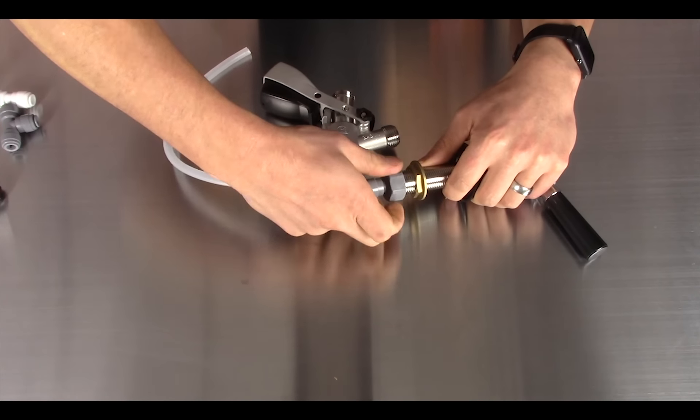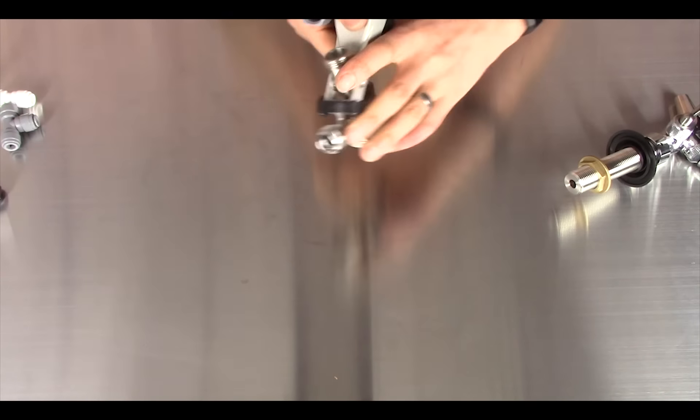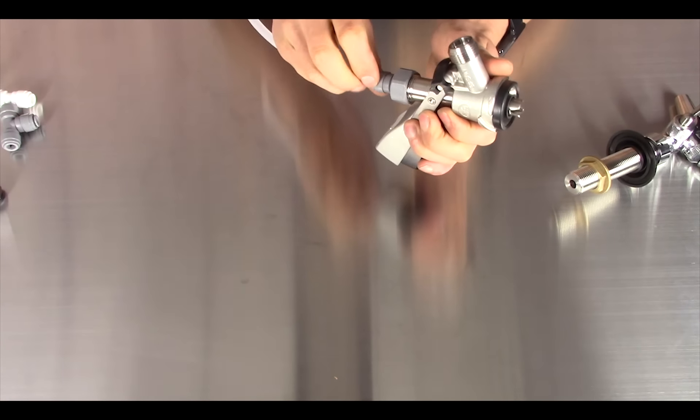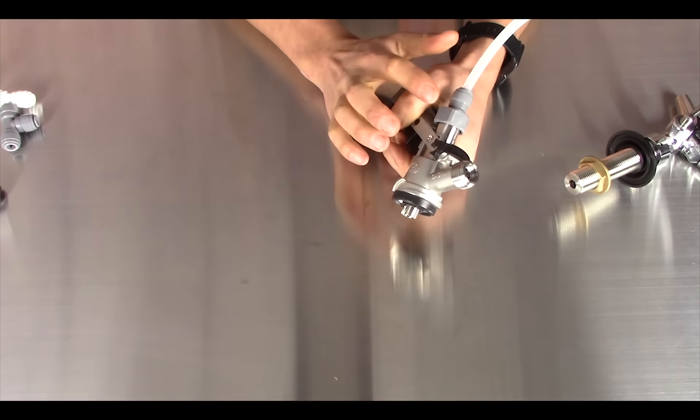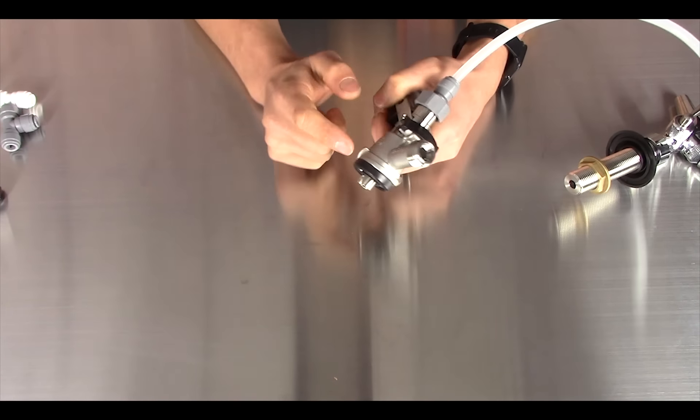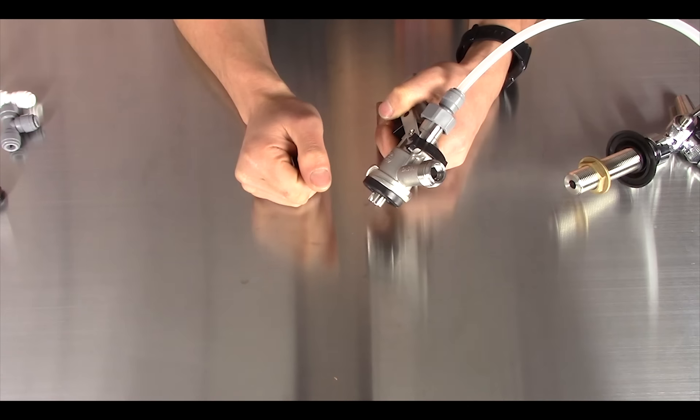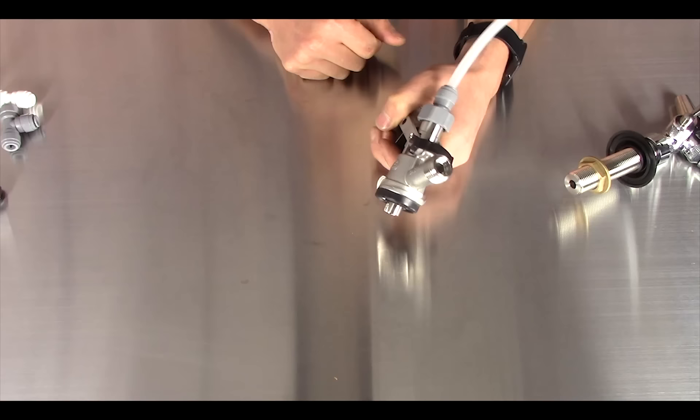So this same 5/8 fitting, same one that also goes onto the keg couplers. Pretty much all the keg couplers that we sell use 5/8 threads. There are a few odd ones, you know, mainly in Europe and some other countries where they use the half inch, but generally speaking on all of our keg couplers we use 5/8 on both the gas and the liquid output on the keg couplers. So yeah you can use this one 5/8 threaded bit on pretty much all the keg couplers that we sell.